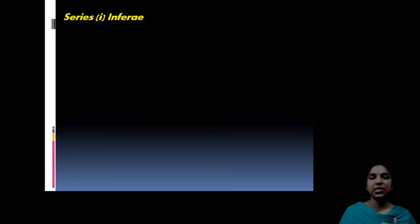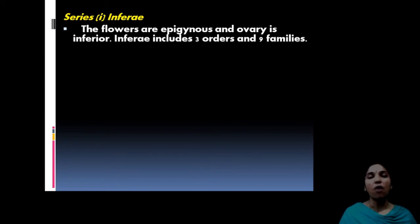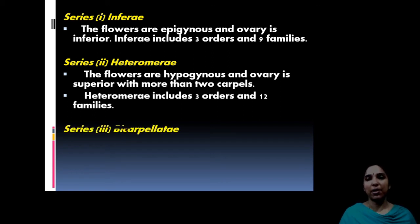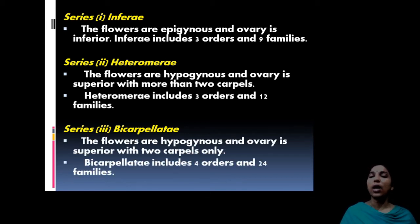Series 1, Inferae, has epigynous flowers with an inferior ovary — the term itself suggests inferior. It has three orders and nine families. Heteromerae has a superior ovary but more than two carpels; it has three orders and twelve families. Bicarpellatae — the term itself means two carpels — is hypogynous with two carpels, comprising four orders and twenty-four families.